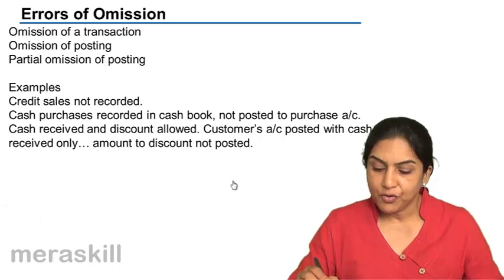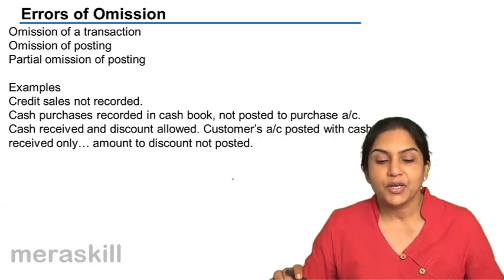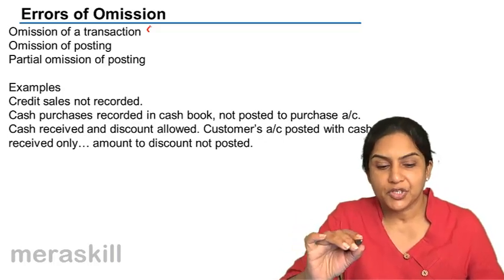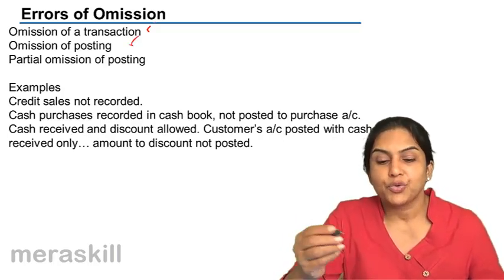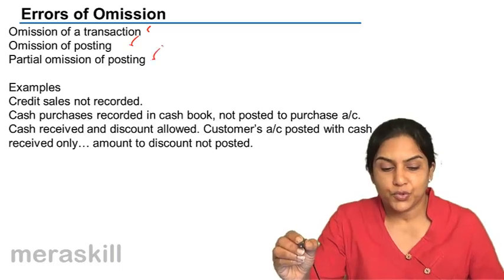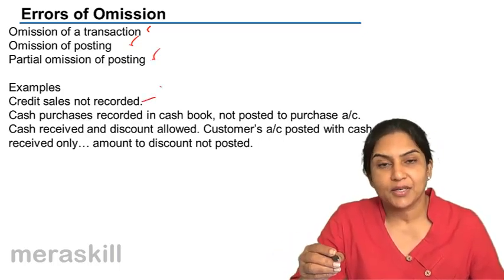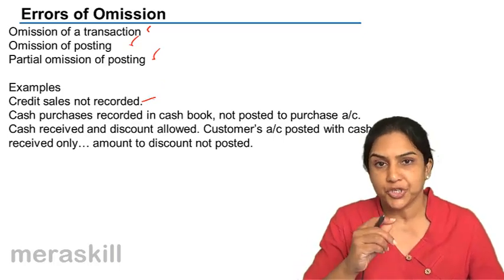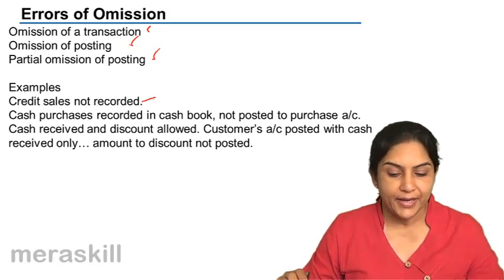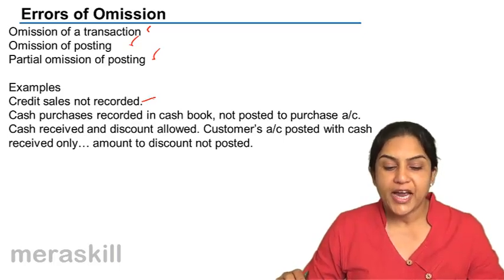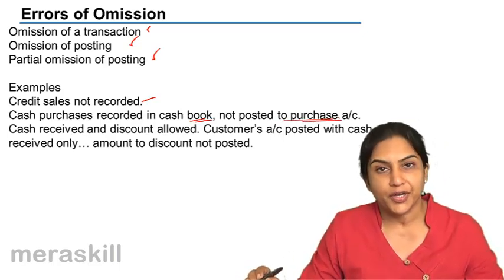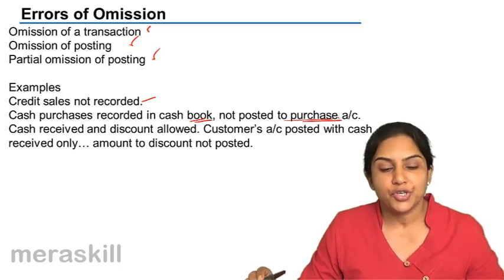Errors of omission may be omission of a transaction or omission of posting. For example, an invoice not recorded in the purchase day book is an omission of a transaction — credit sales not recorded means the trial balance would still agree. Omission of posting: cash purchase is recorded in the cash book but not posted to the purchase account — obviously, the trial balance will not tally.